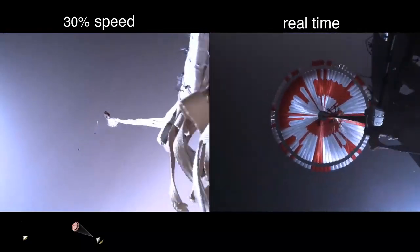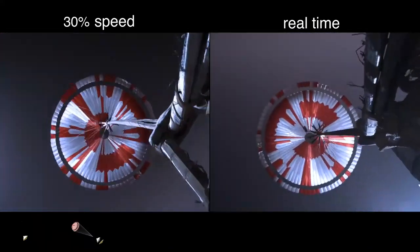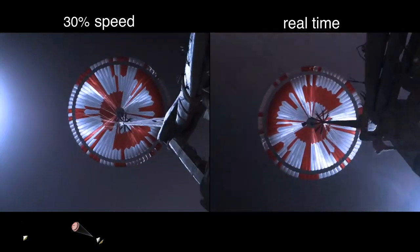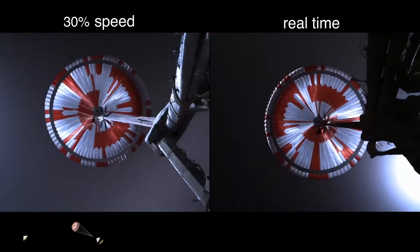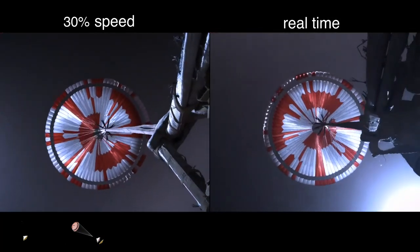Parachute deployed. The navigation has confirmed that the parachute has deployed, and we are seeing significant deceleration in the velocity. Our current velocity is 440 meters per second at an altitude of about 12 kilometers from the surface of Mars.